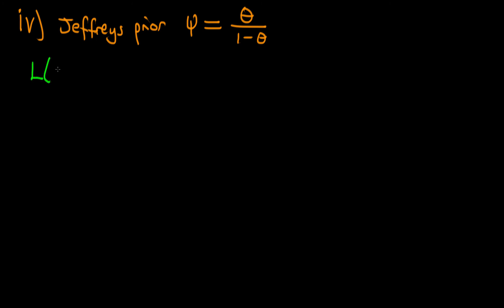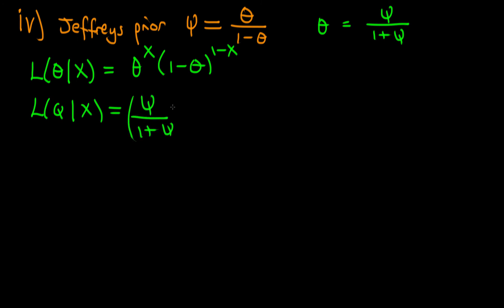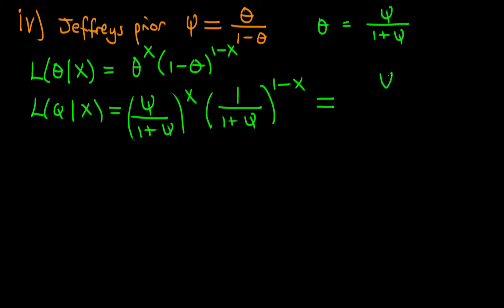That's easy to do because we already know what it is in terms of theta. L of theta given x is just equal to theta to the power x times 1 minus theta to the power 1 minus x, which we can rewrite in terms of psi. We know that theta equals psi over 1 plus psi, so that gives us psi over 1 plus psi to the power x times 1 over 1 plus psi to the power 1 minus x, which collecting powers gives psi to the power x over 1 plus psi.